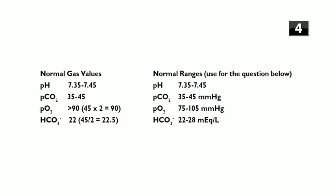Normal reference values: pH is 7.35 to 7.45. For PCO2, just remove the seven — normal PCO2 is 35 to 45. Normal PO2 should be about double the PCO2, so PO2 is greater than 90. Normal bicarb is about half of PCO2 — remember 22 to 24 for bicarb.